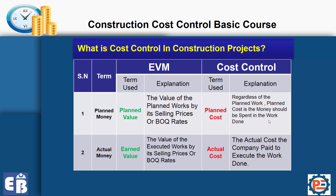On the other hand, cost control uses the term planned cost. Regardless of the planned work, the planned cost is the money that should be spent on the work done. For example, let's say you executed 100 cubic meters of reinforced concrete. The planned value would be the value of that 100 cubic meters according to your contract or BOQ prices, whereas the planned cost is the planned money you should spend according to your cost baseline to execute those 100 cubic meters.